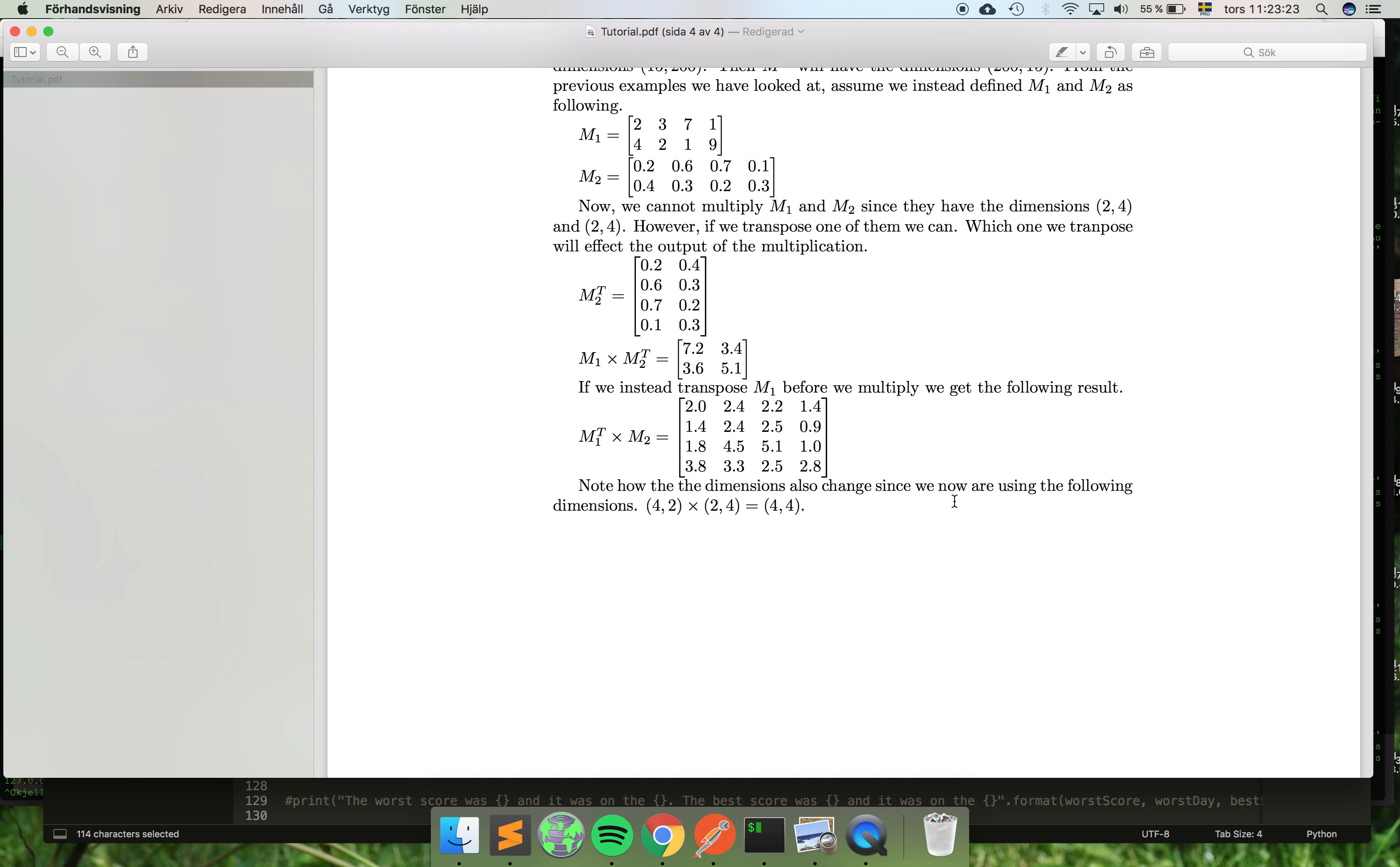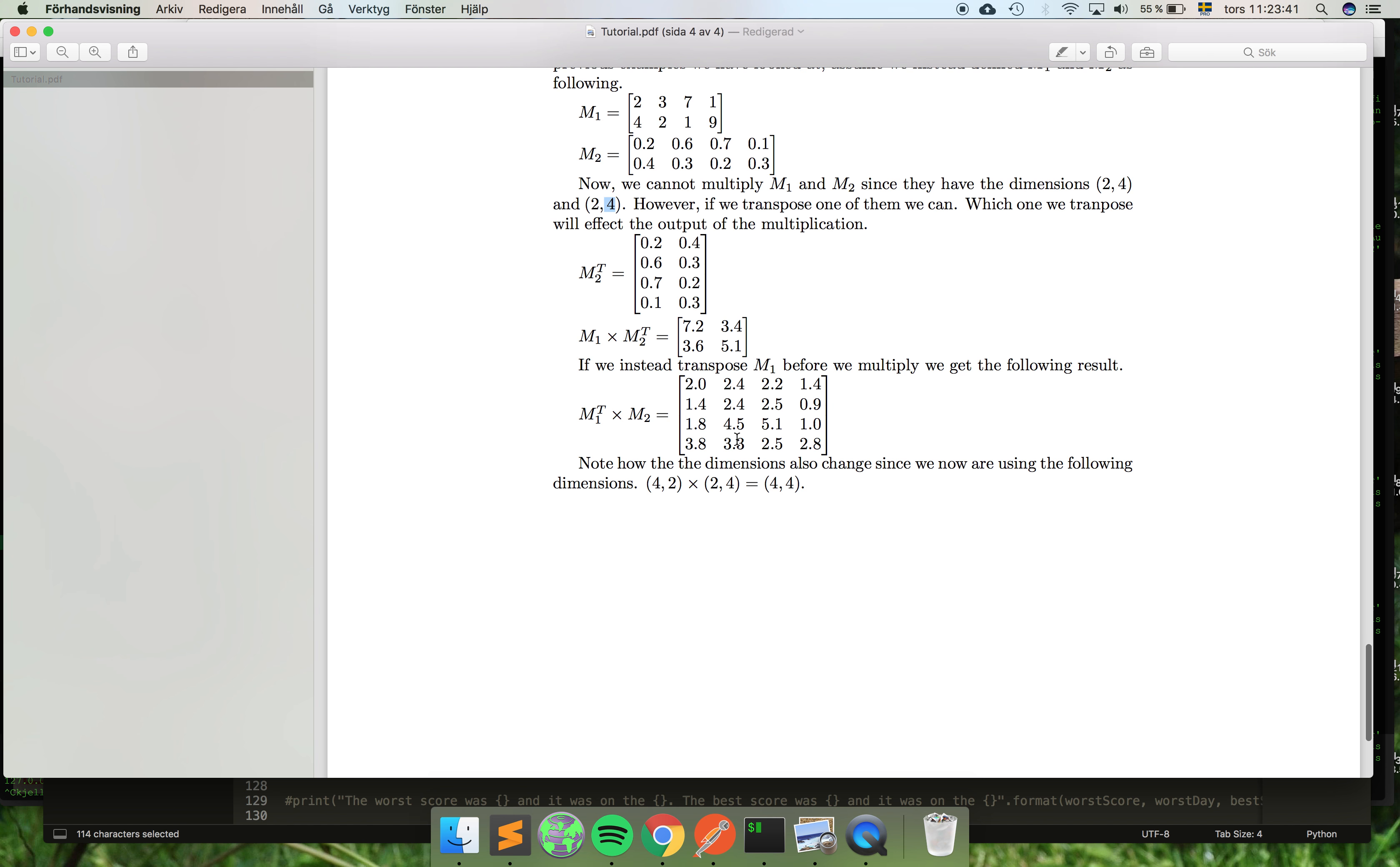But if instead, let's suppose that you transpose M1 instead. Now what this is gonna do is you're gonna take this and transpose it. So it's gonna have the outermost here is now gonna be the 4, and then it's gonna be the 4 from this one. So it's gonna be a 4 by 4 output matrix, which is this one right here.